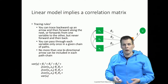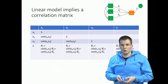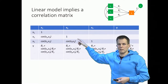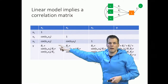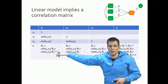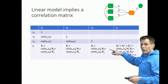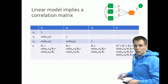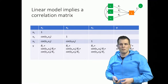We can use these tracing rules to calculate the full correlation matrix between all variables in our data. The variances of all x variables are one because we're working with correlations. The correlations between x's are given by the data. Then we have equations for the correlations between y and x1, y and x2, y and x3, and the variance of y — which is the covariance of the variable with itself. This equation gives us the implied variance.